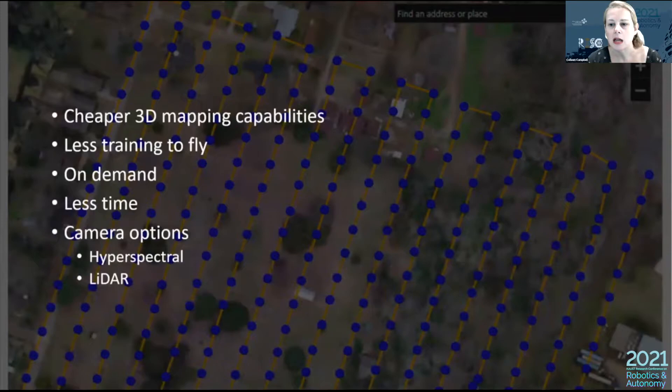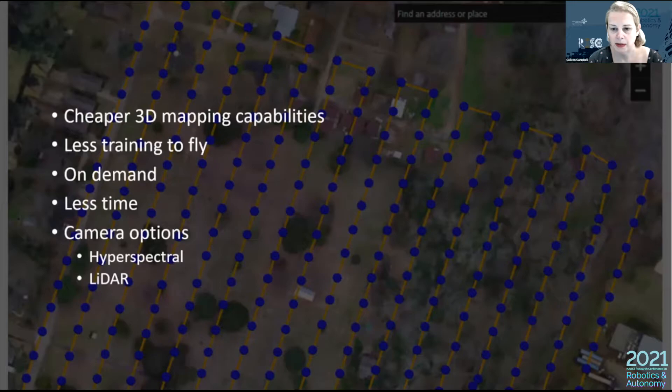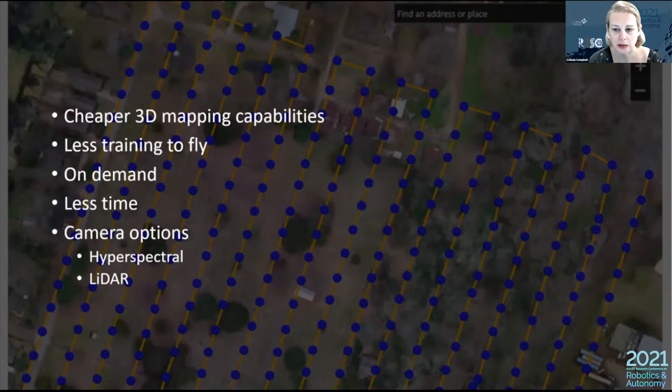Drone technology is evolving with many capabilities. One of those things that makes drones so useful is their ability to be modified — some drones are large while others are small, and a variety of cameras and sensors can be added, including hyperspectral cameras and LiDAR. These modifications and the portability of drones make them ideal for field work where space and time are limited. Drones are now being used for mapping places previously too small for an airplane or satellite, and they are cost-effective for researchers or small businesses.